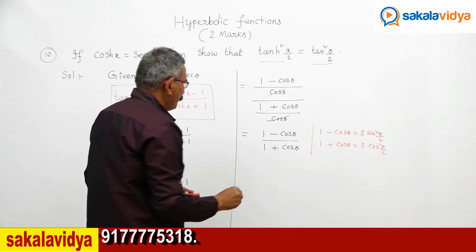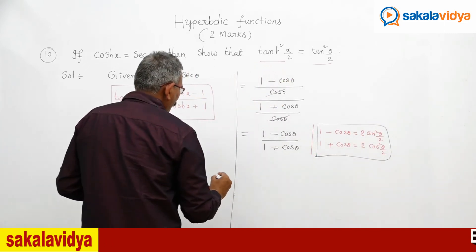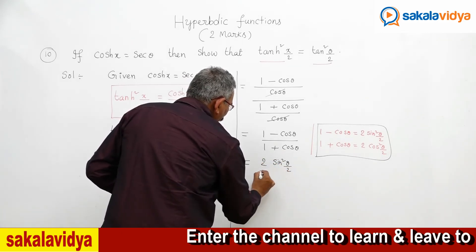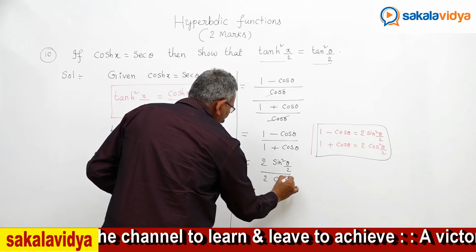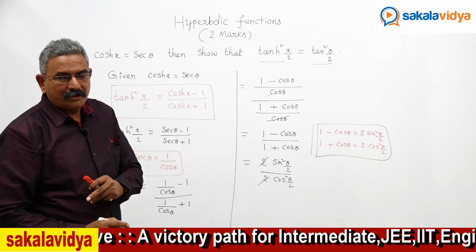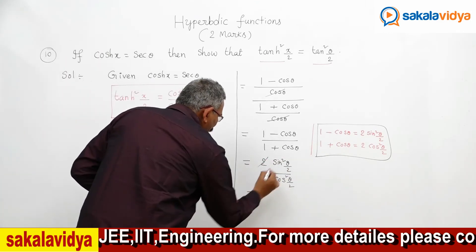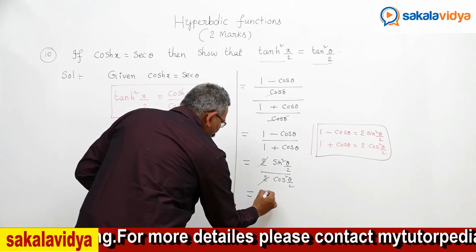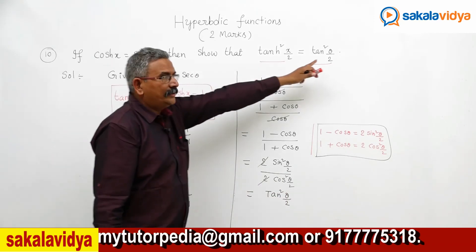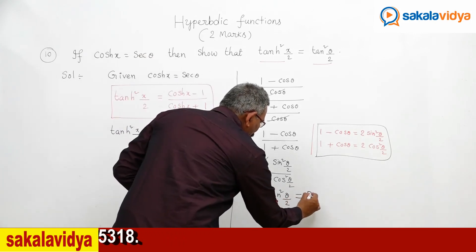This becomes 2 sin²(θ/2) divided by 2 cos²(θ/2). The 2s cancel. Sin(θ/2) divided by cos(θ/2) is tan(θ/2), so we get tan squared(θ/2). Therefore tanh squared(x/2) equals tan squared(θ/2), which is what had to be proved.